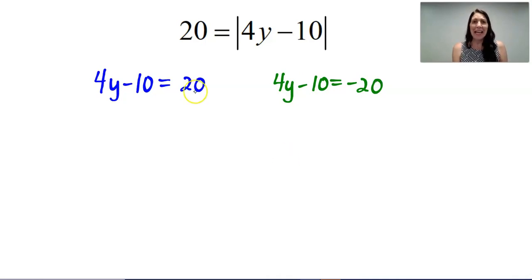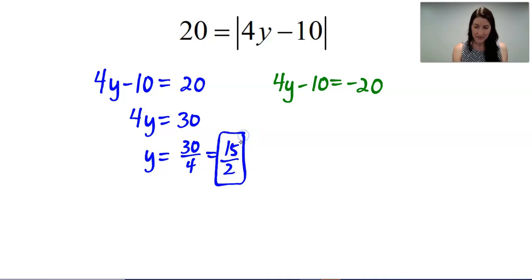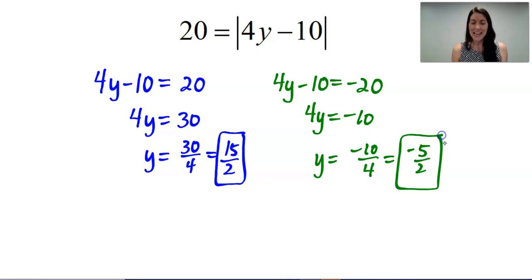Now notice, and I did it without even noticing, I actually flipped the equation. I think it's just habit. I usually put the constant on the right side, but you can absolutely keep the 20 and negative 20 on the left-hand side. I think it's just a habit for me as a teacher. Alright, let's add the 10 over and divide by 4, which gives me 30 over 4, which reduces to 15 halves. Right over here, same thing. Let's add the 10 and divide by 4, and we get an answer of negative 5 halves.